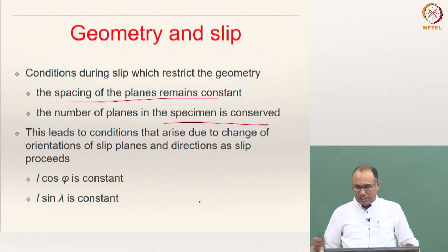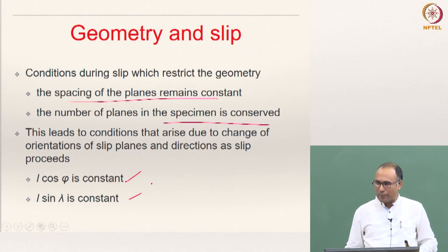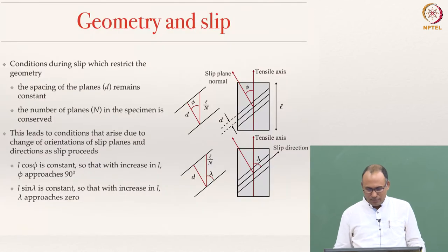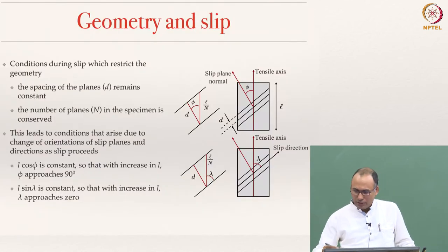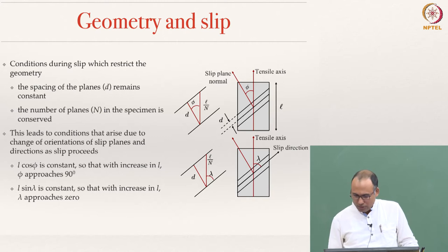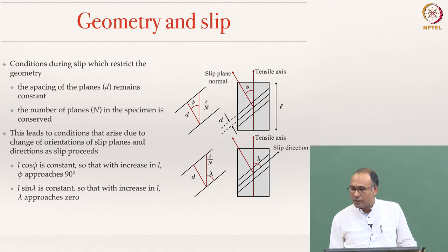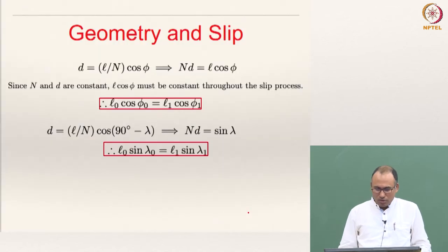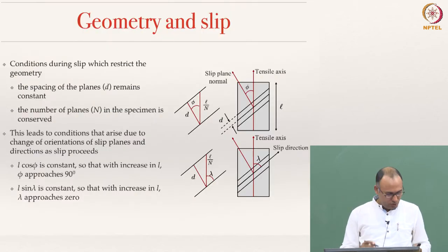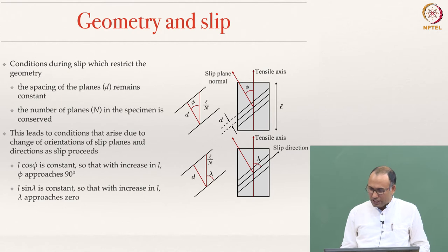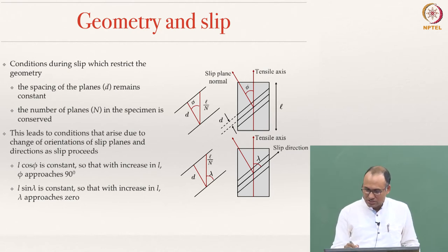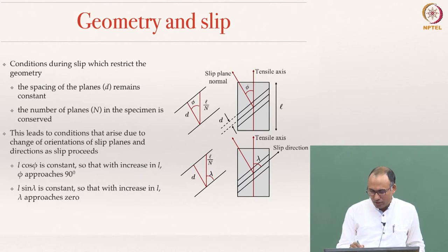That leads to two conditions: L cos φ and L sin λ being constant, where L is the length of the specimen. If you see this picture, L is your specimen length and D is your interplanar spacing. You can show that D equals L by N, so D equals L by N cos φ.